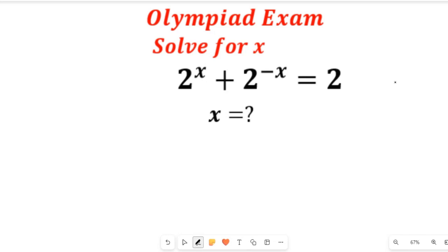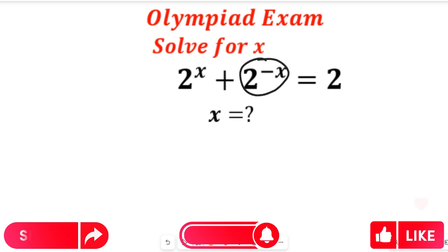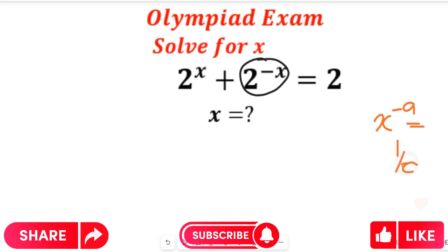In this question let's solve for the value of x. To solve for x, the first thing we'll consider is to reduce this expression, which has a negative exponent. We need to remember the fact that if we have x to the power of negative a, according to the law of indices, this can be equal to 1 divided by x to the power of a.